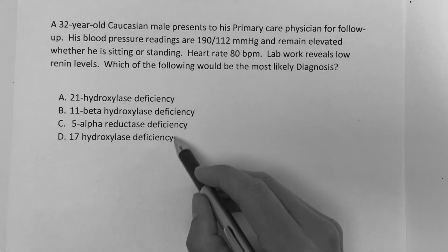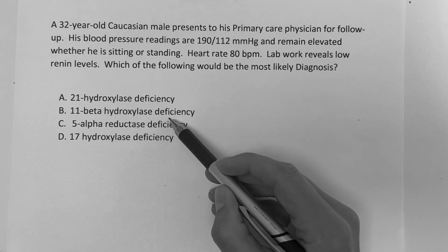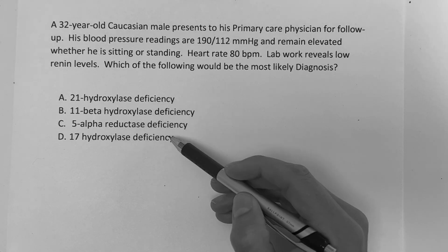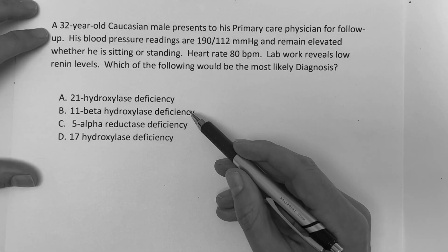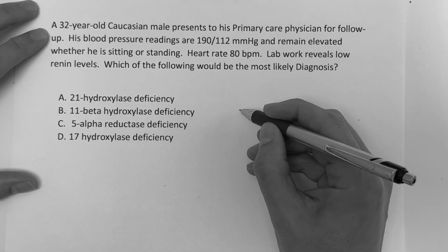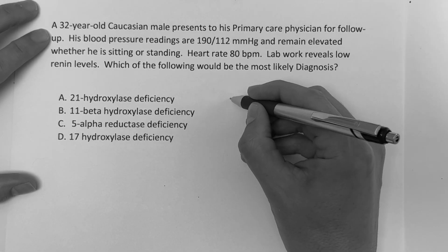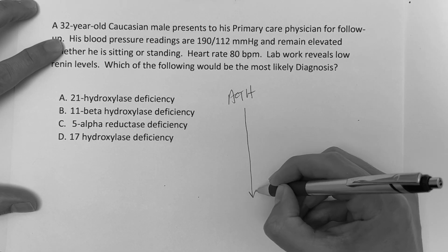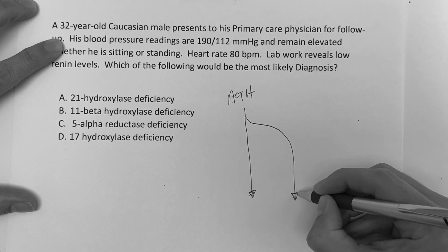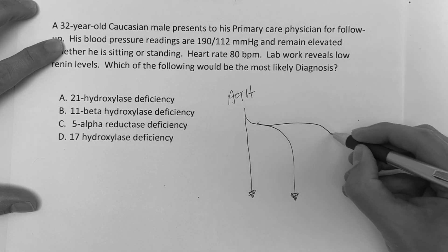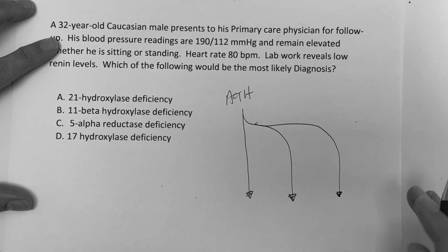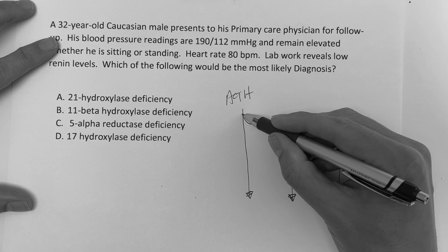So to answer this, anytime you see this on the step exam, now they could be nice to you and ask you which one's just a deficiency, but essentially you've got to know this process. So here's the concept. You're in the adrenal, and you're going to think of it like this. And we did a video on this as well, and I'll put the link in this below just to give you more descriptions.